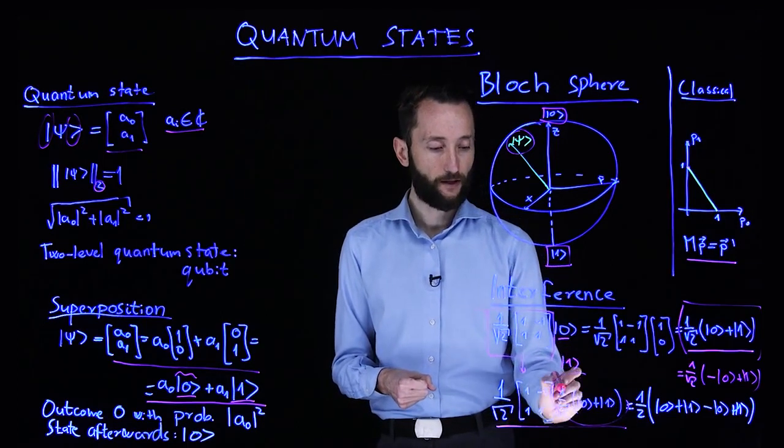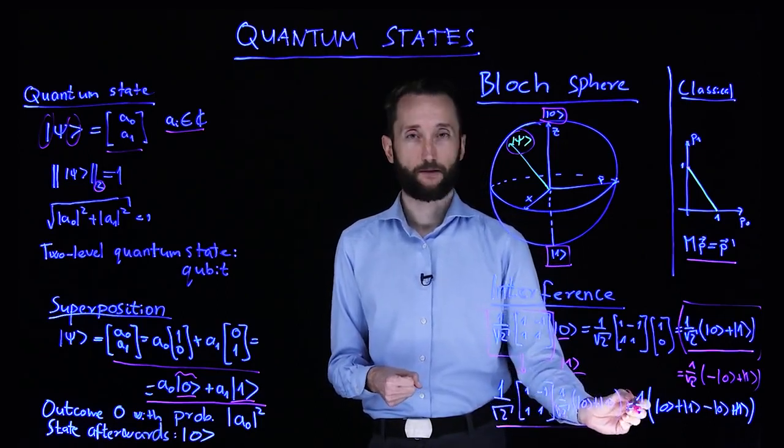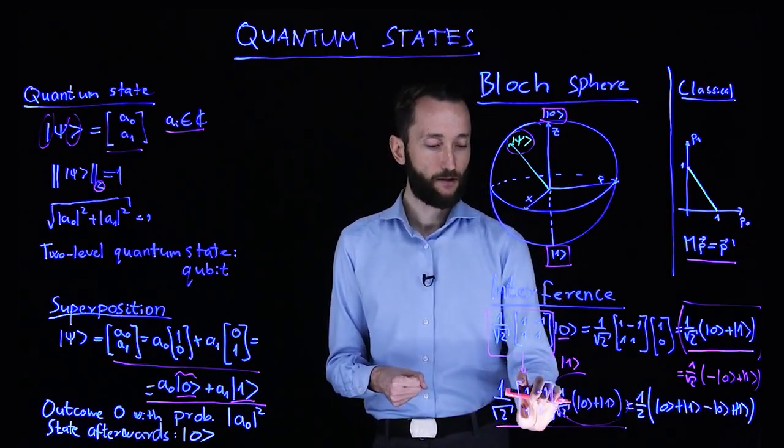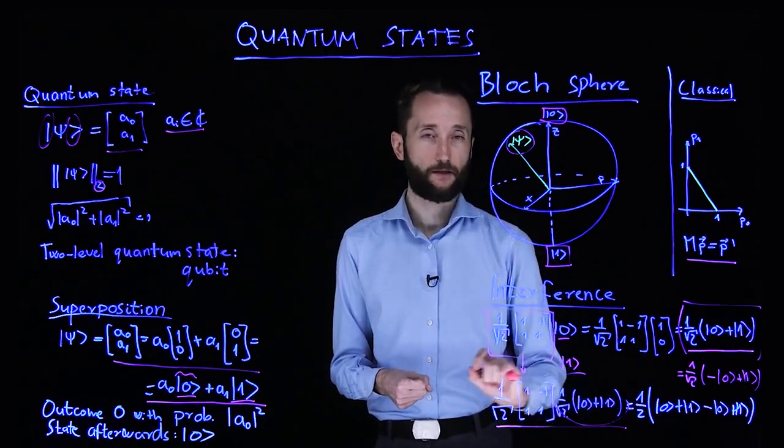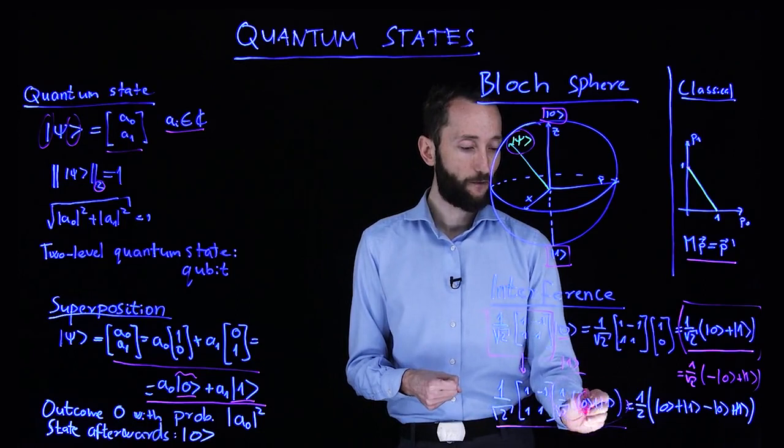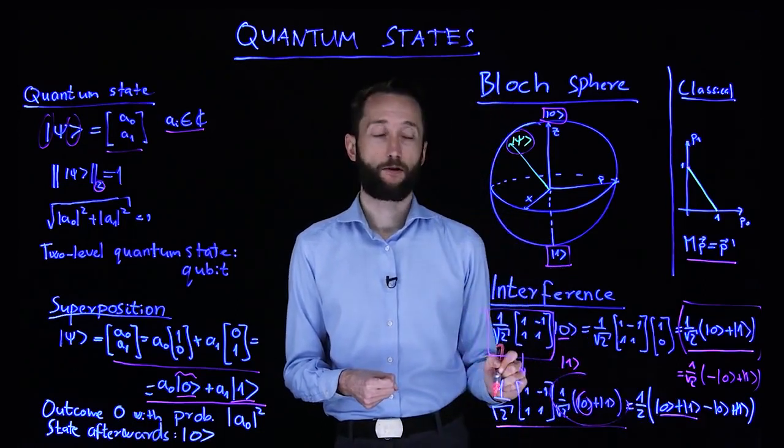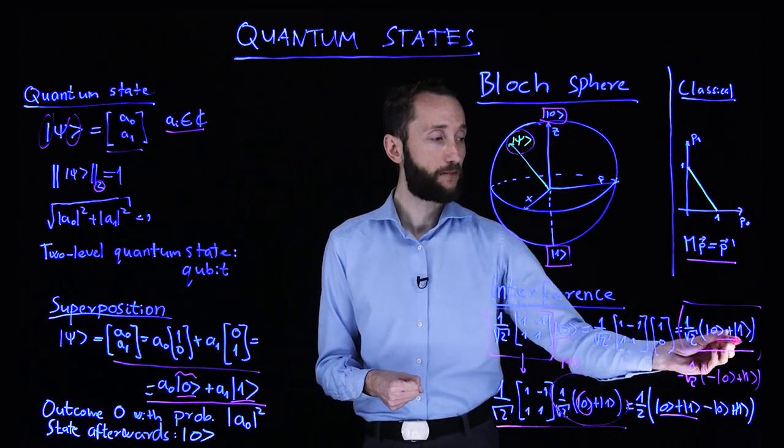So this is a linear operator, so I can pull out the 1 over square root 2 to the front, so it simplifies to one half. And I can also take the matrix operation basis vector by basis vector in the superposition. So I act on the first one, from that I get the superposition of zero and one, just like here, the same thing.